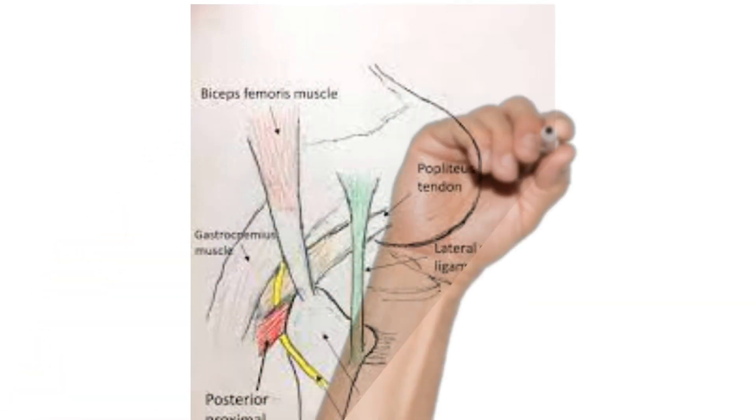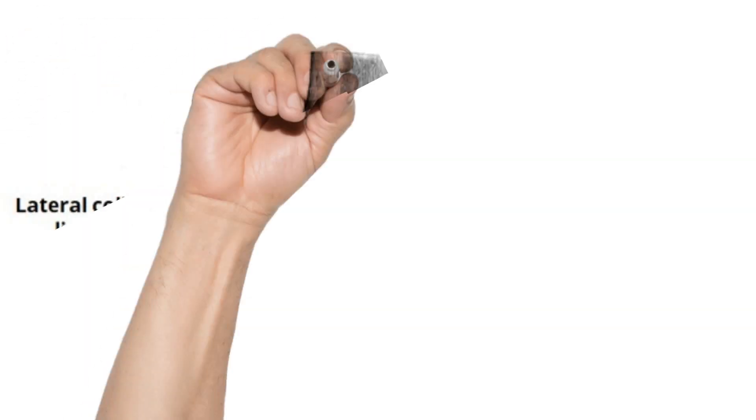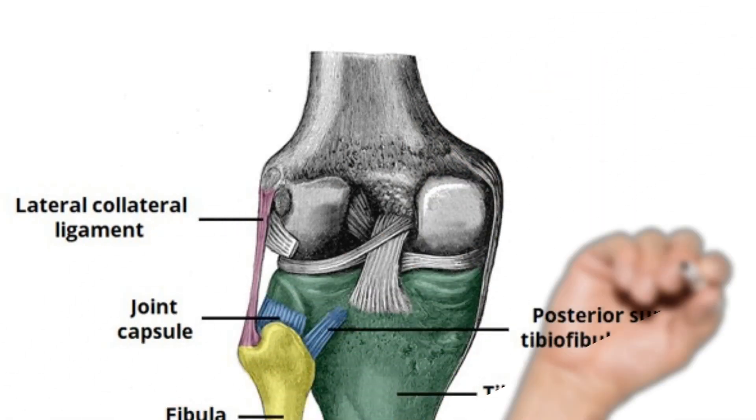The arcuate ligament is deep to the fibular head, attached deep to the fibular head and to the insertion of the lateral collateral ligament, popliteofibular ligament, and biceps ligament, making it the deepest structure attached to the fibular head. The fabulofibular ligament is a variable structure.